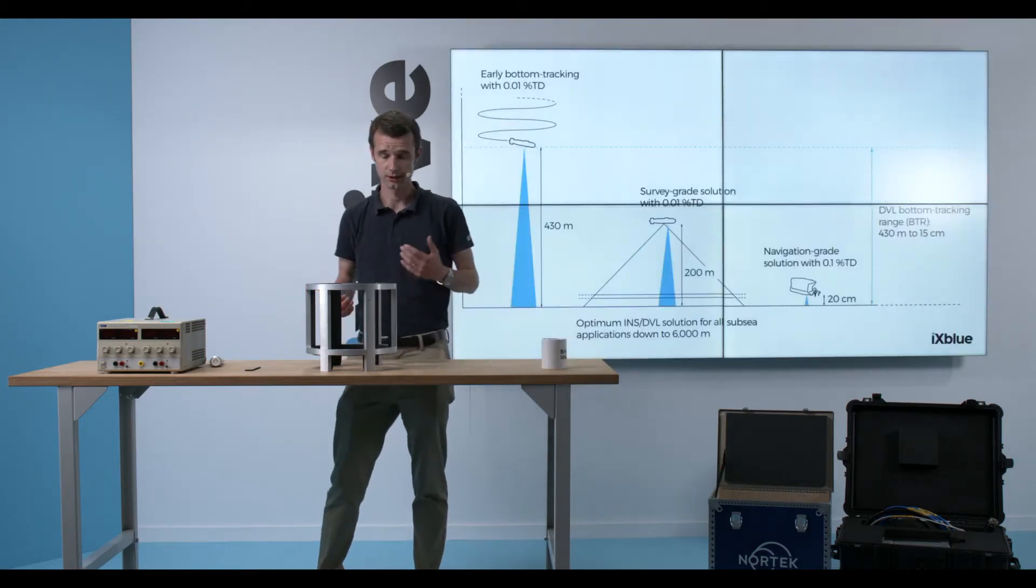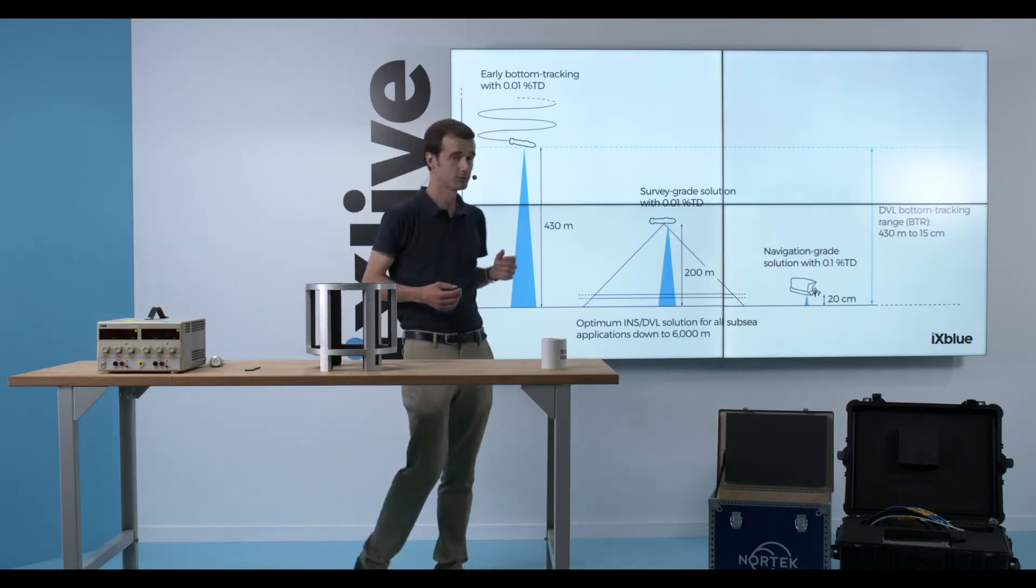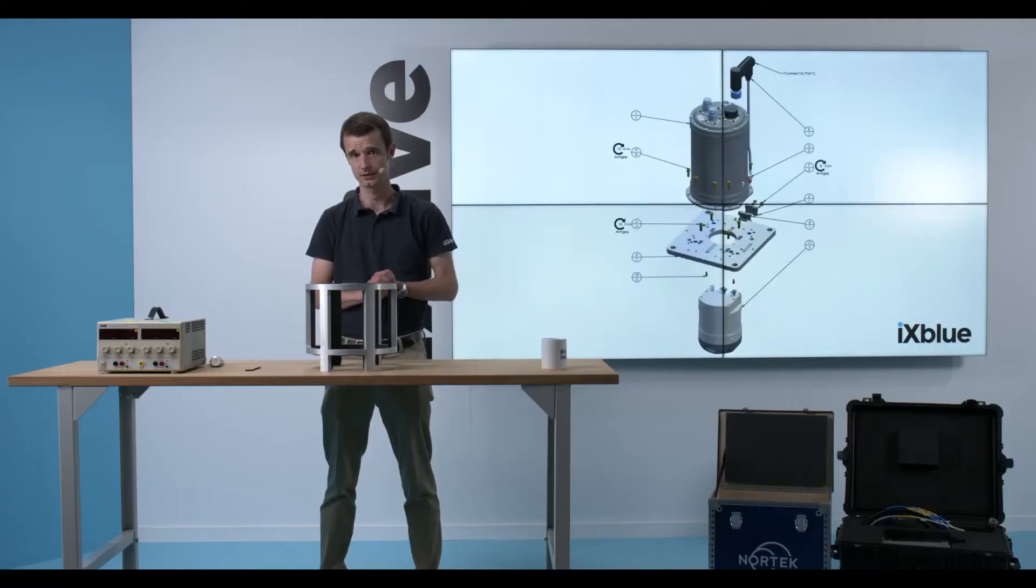On AUVs, we'll use either early bottom tracking or survey grade solution up to 0.01% of the travel distance. The AUV will integrate our OEM product range, which are called the Phins Compact Series. They will fly around a few hundred meters up to the seabed. While on ROVs, we'll use titanium subsea grade units to go at sea up to 20 cm from the seabed. This is the reason why today I will show you the integration of our OEMs and our NORTEK DVL together.